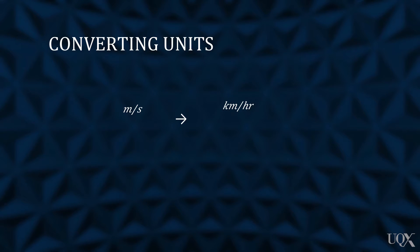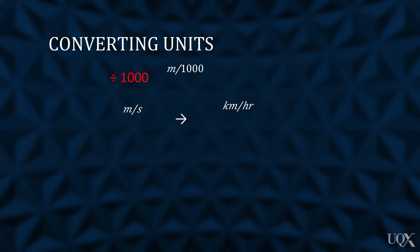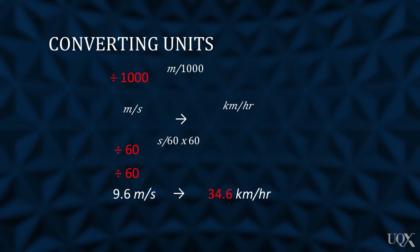First, we must convert meters to kilometers. We can do this by dividing the distance in meters by 1,000. The second step involves converting the time from seconds to hours. We can do this by first dividing the time in seconds by 60 to get minutes, and then dividing again by 60 to get hours.